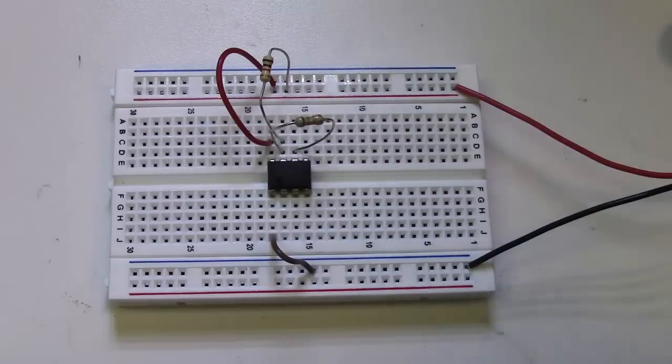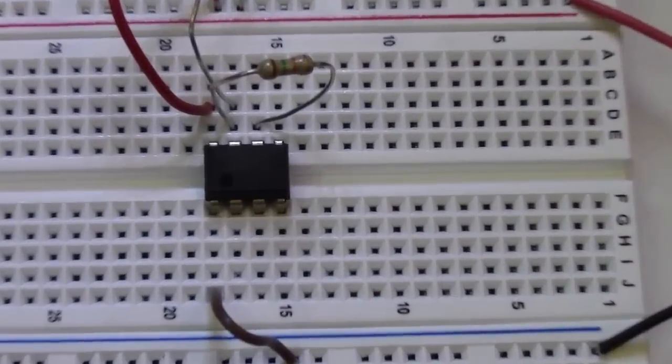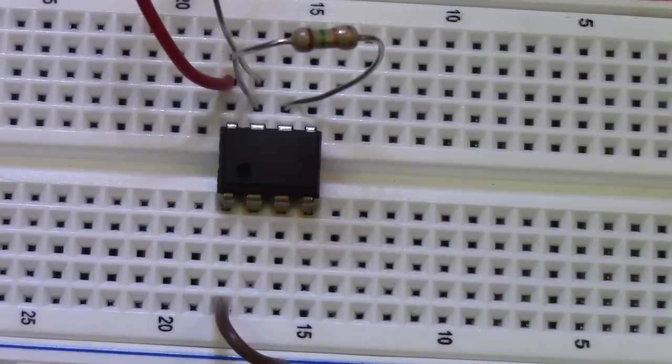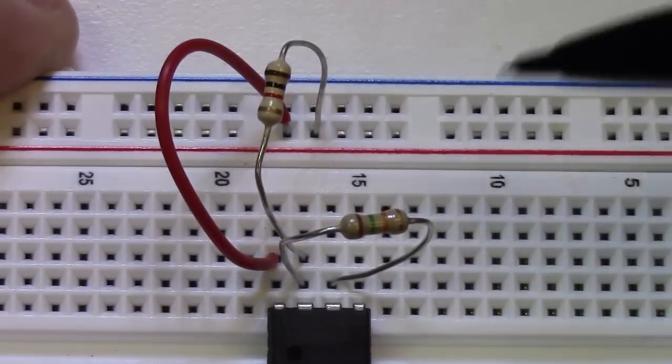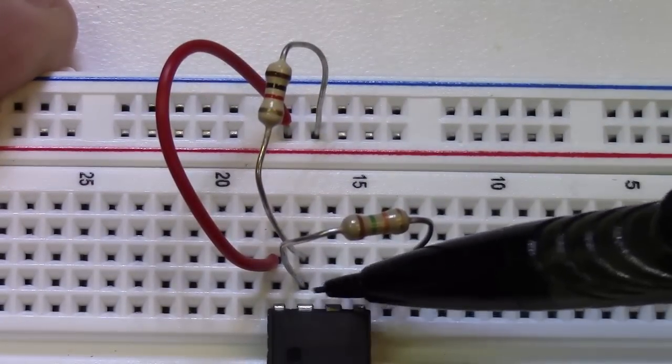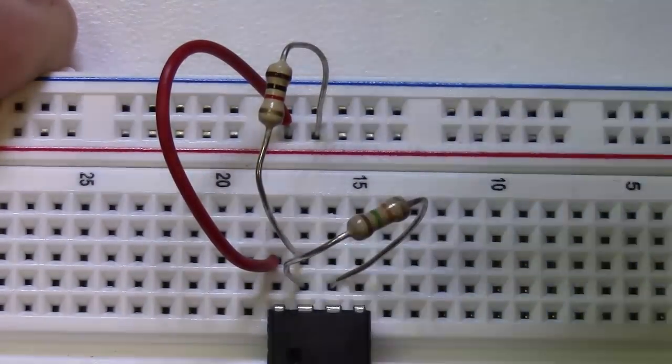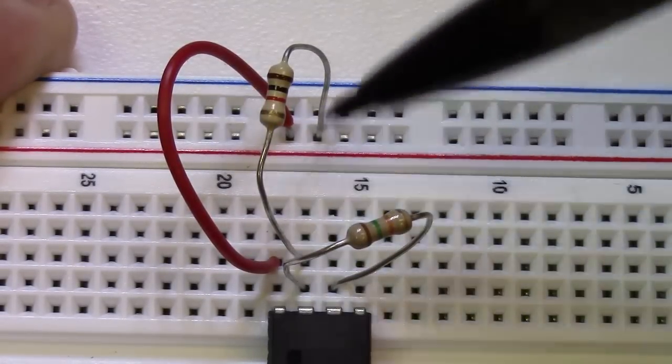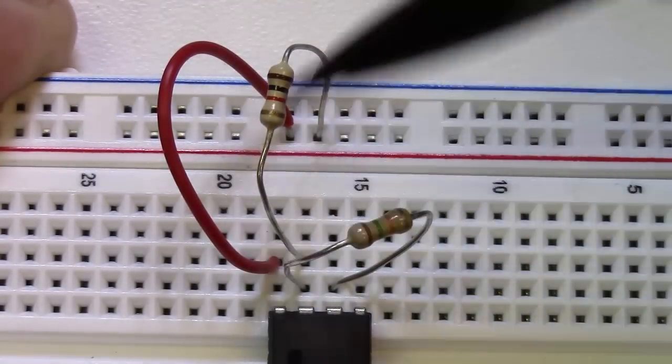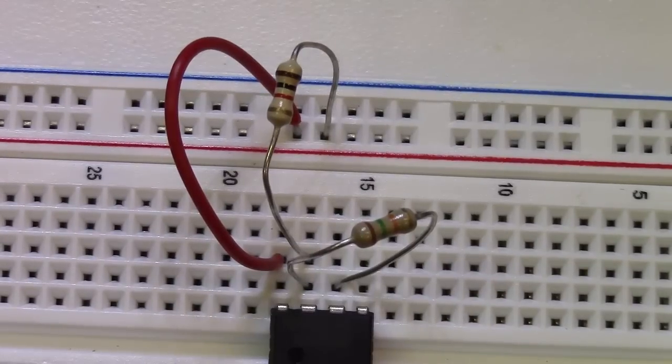Let's zoom in here and show you this a little bit. We have one to ground, we have seven to six, we have the 1K from seven to V plus, we have eight to V plus. One thing we didn't do yet was hook pin four to V plus.